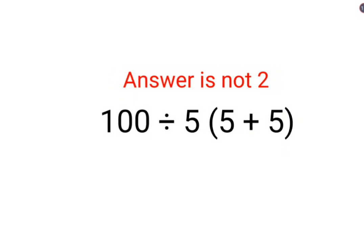Hello and welcome everyone. Today we are going to understand why the answer for this question is not supposed to be 2. We have 100 divided by 5 and in bracket we have 5 plus 5.